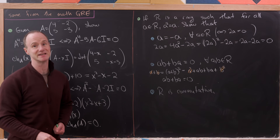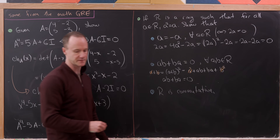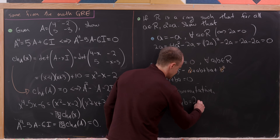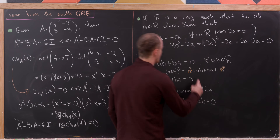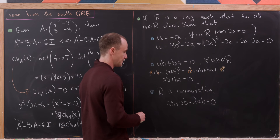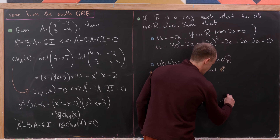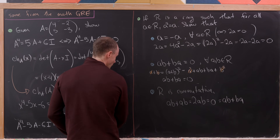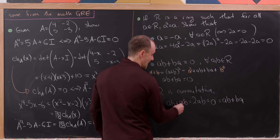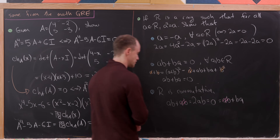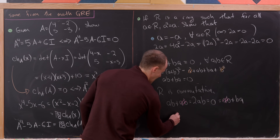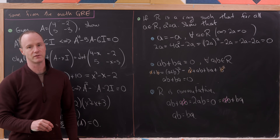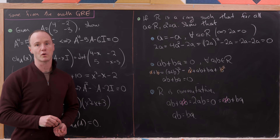To show commutativity: observe that ab + ab = 2ab = 0 by result one. But also 0 = ab + ba by result two. Canceling ab from both sides gives ab = ba, which is exactly the condition for this to be a commutative ring.